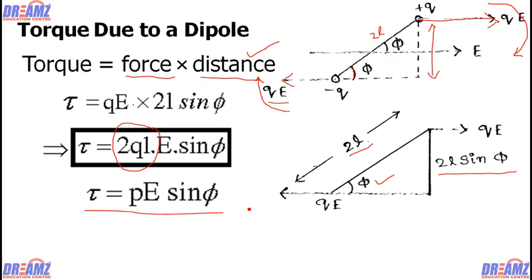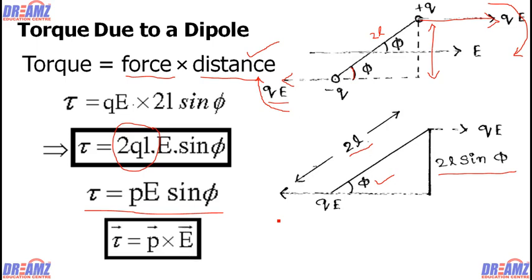In vector form, the torque is the cross product of p and E, because p is the dipole moment vector and E is the electric field intensity vector. So the torque is a vector equal to the cross product of the dipole moment and the electric field intensity. This is the torque produced inside a dipole whenever the dipole is placed inside an electric field.